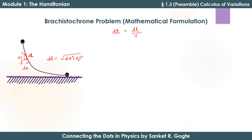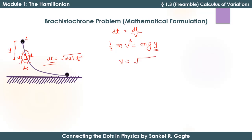Since dL is infinitesimally small, I can say the velocity is almost constant as the body moves along that length. What is that velocity? From energy conservation: ½mv² = mgy, where y is the depth below point A. So as the body reaches the section dL, it has lost height y, the gravitational potential energy is converted to kinetic energy, giving v = √(2gy).